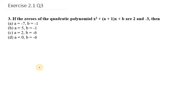Question number 3 says if the zeros of the quadratic polynomial x² + (a+1)x + b are 2 and -3. So in this we are given with zeros, therefore we will get two equations out of it.